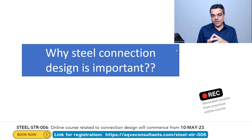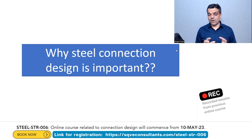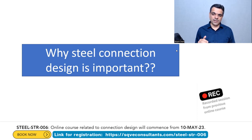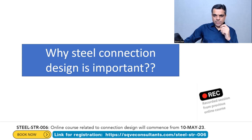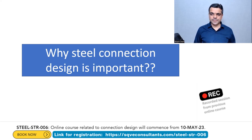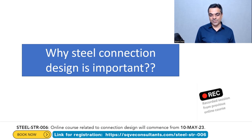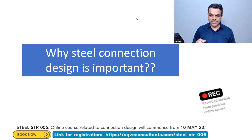If we exclude the joint or connection part from steel structures, then steel members without connections are very strong — steel has very good strength. But we cannot avoid joints, and that's where we introduce joints in steel structures. Those joints actually create a weakness in the structure. That's why, when we talk about the design of steel structures, the steel connection is extremely important.